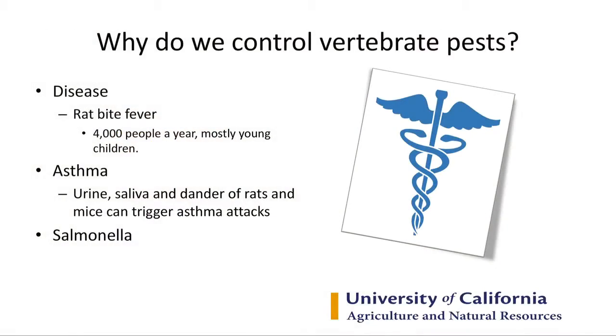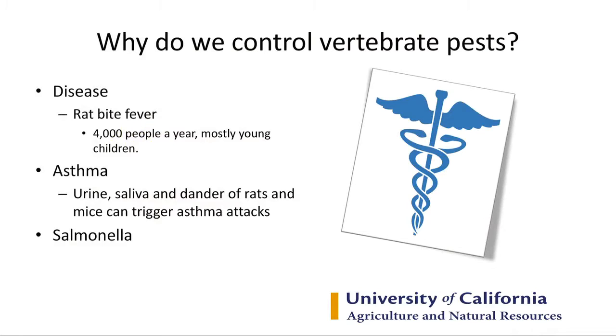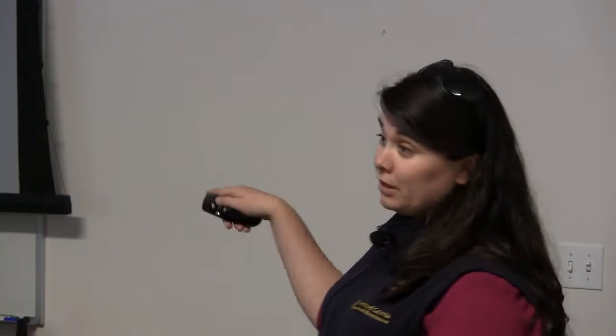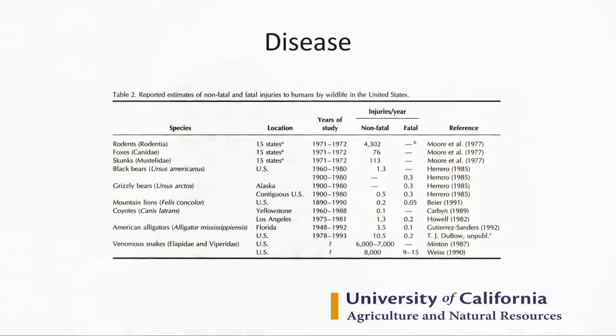You can get asthma from mice and rats running around in the roof — allergens from their dander have been linked to childhood asthma. Most of the time, diseases from rodents come from aerosolized urine and feces, not directly from the rodent itself. Rat bite fever definitely comes from the rodent; plague comes from the flea on the rodent.